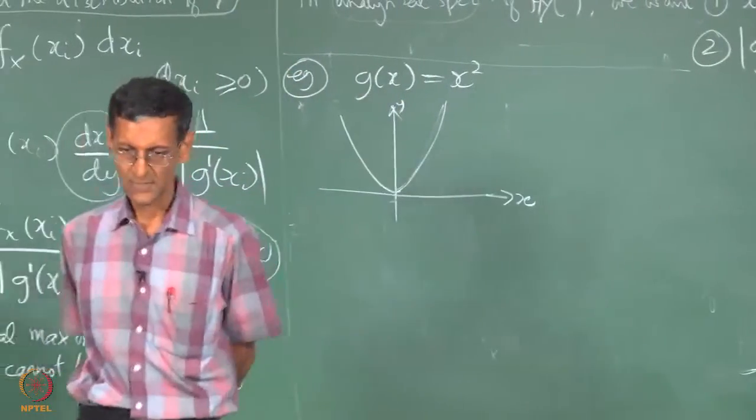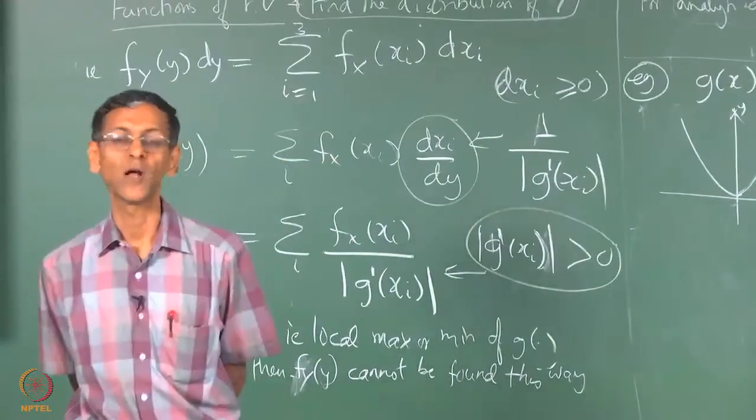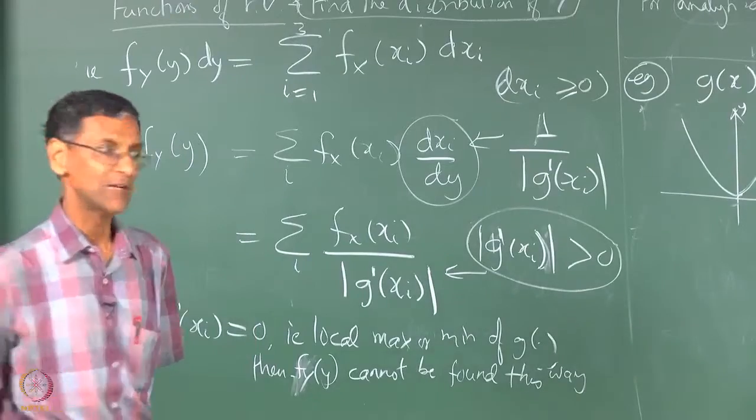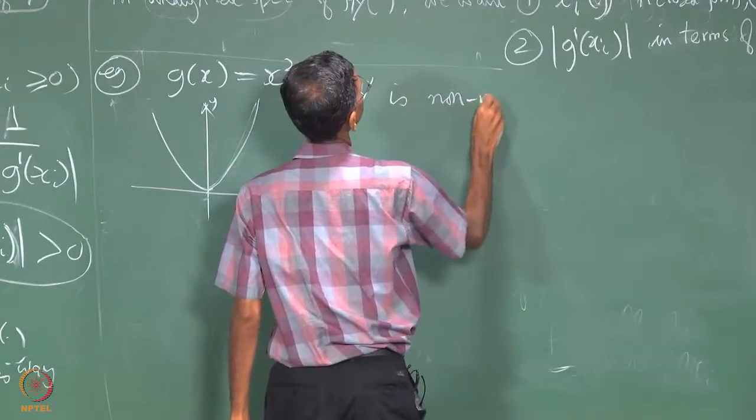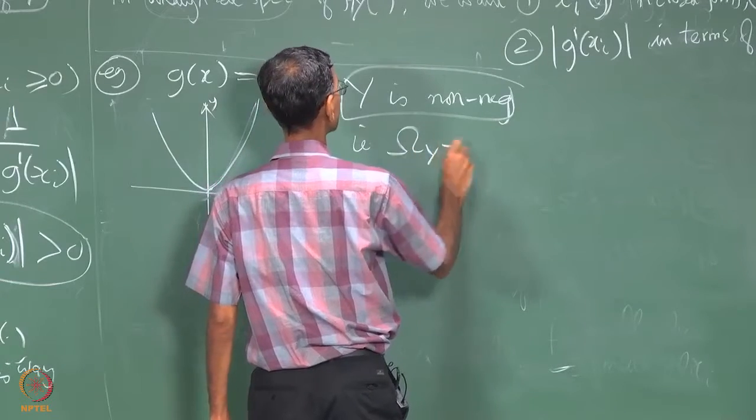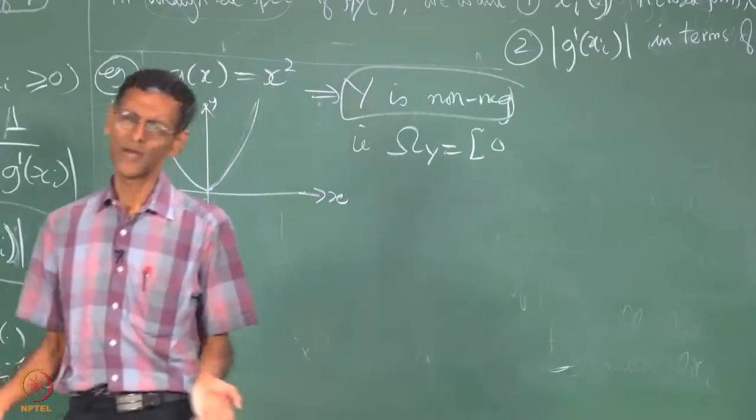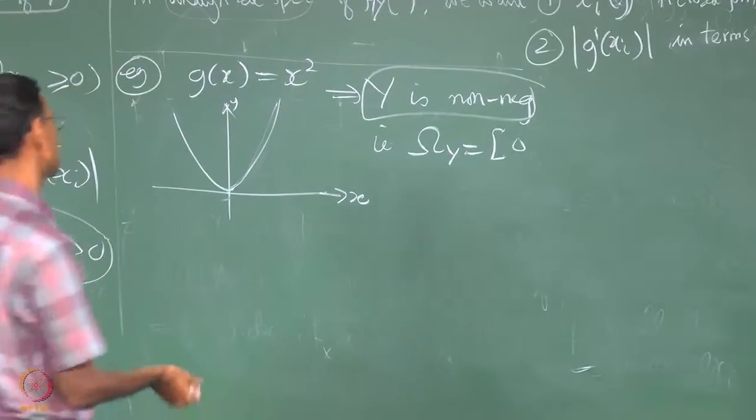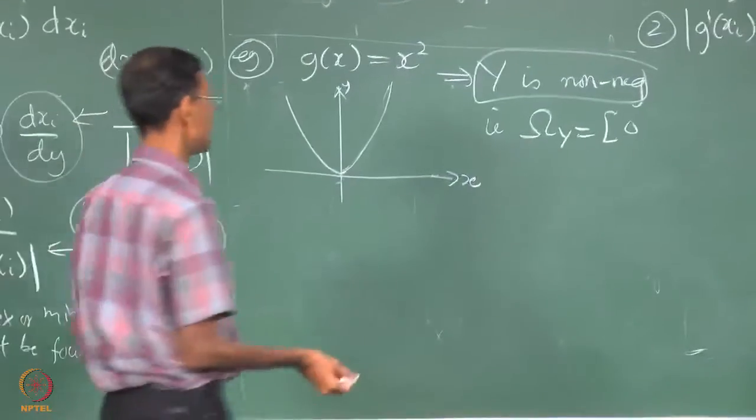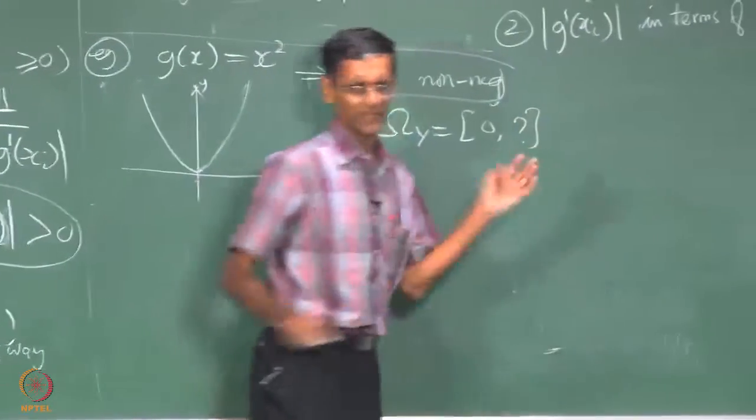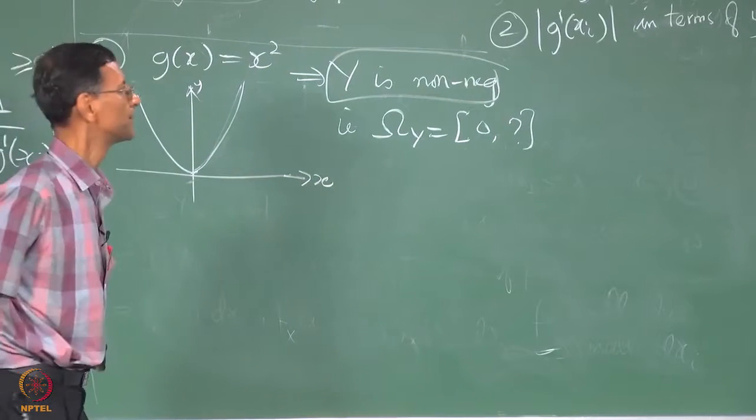So what happens if this squaring element is driven by samples or realizations of a random variable, of some variable capital X? So first of all, as I said you have to determine omega_y and omega_y in this case is always what? Y has to be a non-negative random variable, i.e. omega_y is a closed interval [0, infinity].